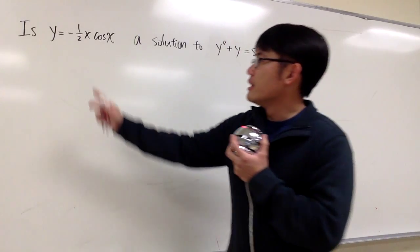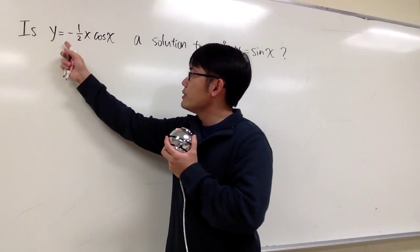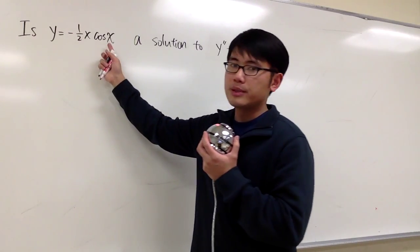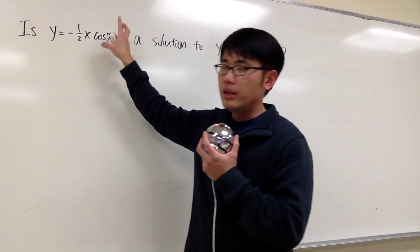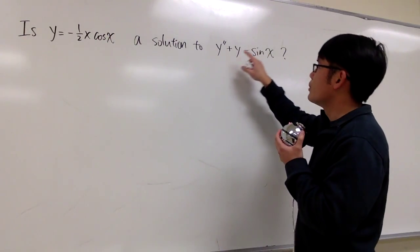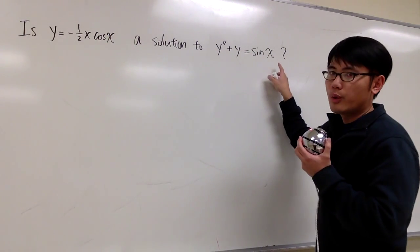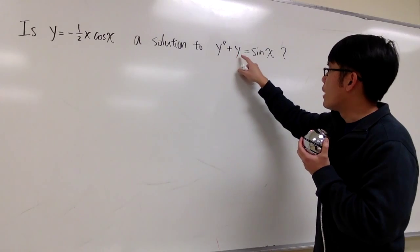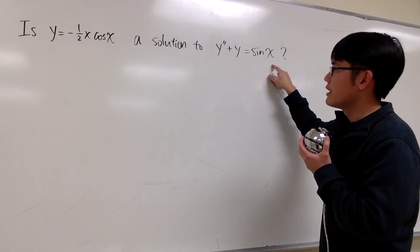And now we are going to check: is y equals negative one-half x times cosine x a solution to this differential equation, y double prime plus y equals sine x?